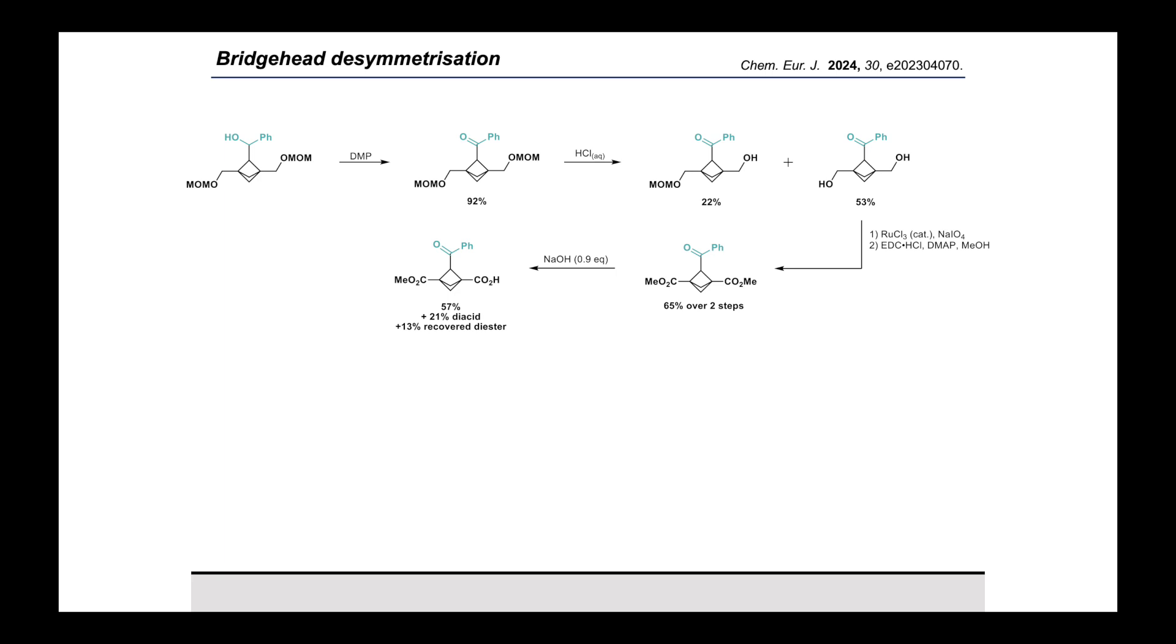Returning to our own work, we also wanted to confirm that we could still control and manipulate the bridgehead substituent in our bridge-functionalized products. To that end, we took this secondary alcohol and oxidized to the aryl ketone to simplify downstream chemistry. Treatment with HCl, with careful control over the reaction time, allowed controlled hydrolysis of the MOM groups to isolate both the symmetrical diol and also the unsymmetrical racemic mono-MOM-protected analogue as well. The diol was returned to the diester under standard conditions, after which it was treated with substoichiometric sodium hydroxide to give this unsymmetrical compound here, bearing one acid and one ester group. From here, there's a whole range of reactions that have been reported in the literature for further functionalization of this general motif.